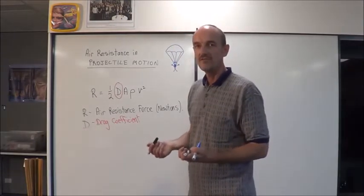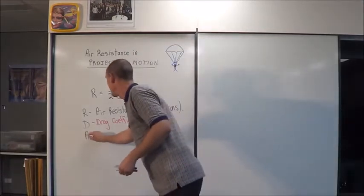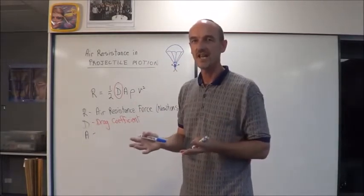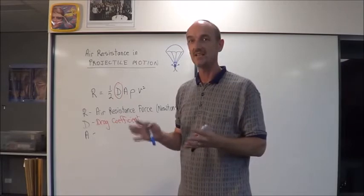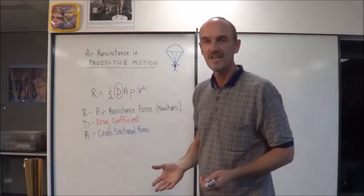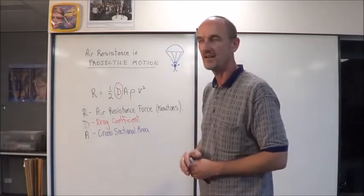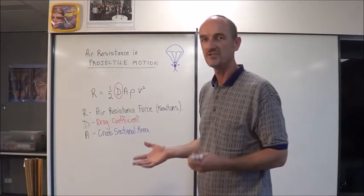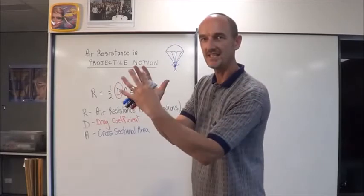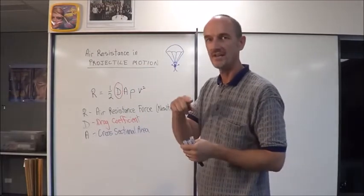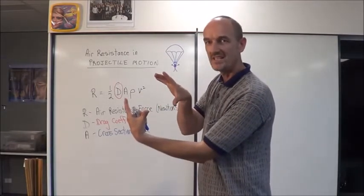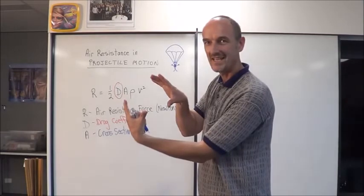Secondly, we have A. A is essentially the cross-sectional area that the object is meeting as it travels through the air. The cross-sectional area is simply an area, and depending on the shape of the object, you can determine the area of the face that's meeting the air. For example, if you had a soccer ball, the face of the object meeting the air is circular.